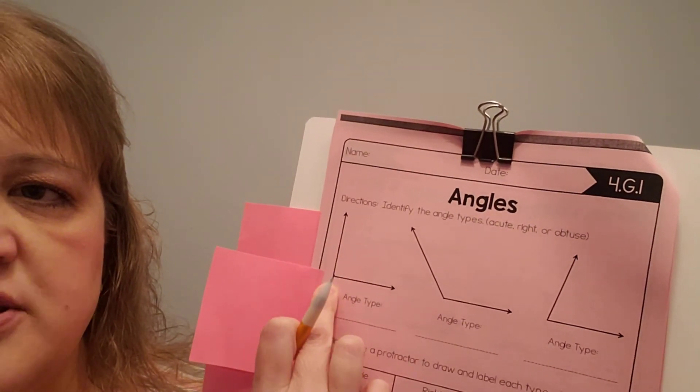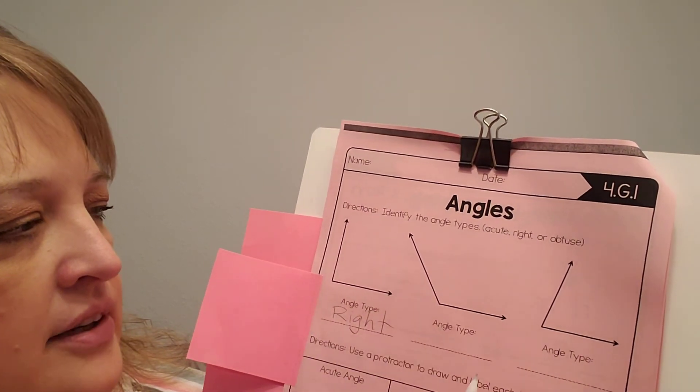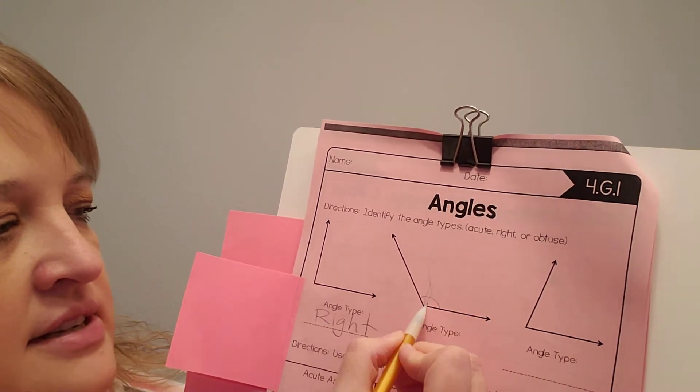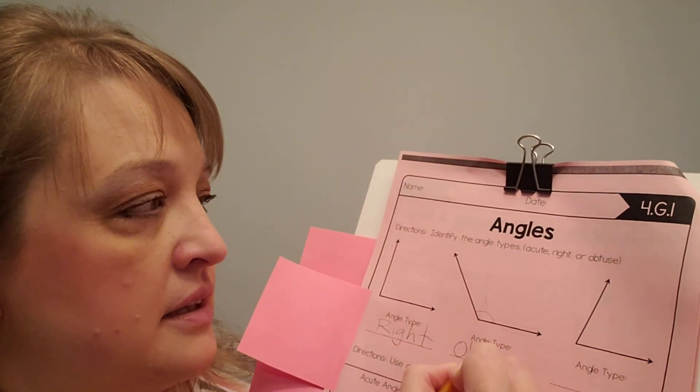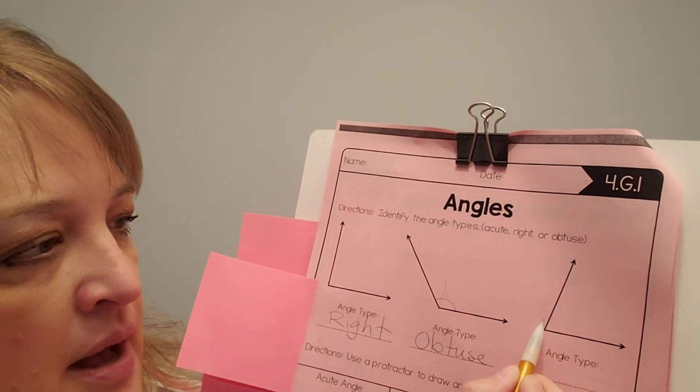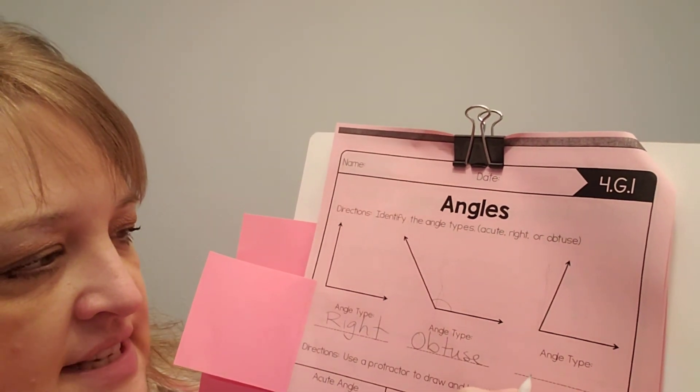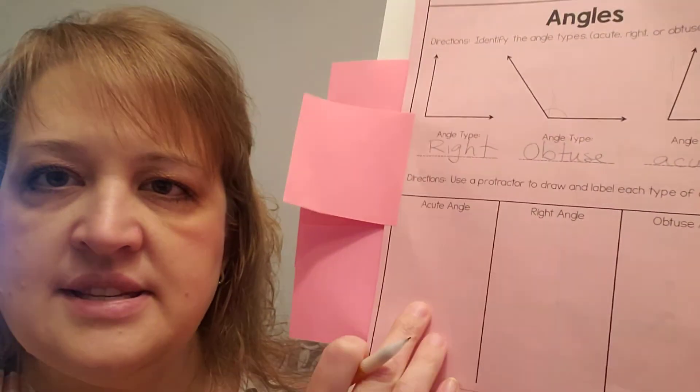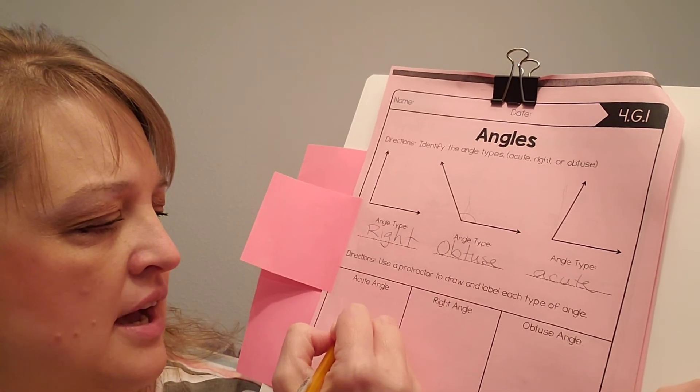Okay. This one is big. This is above 90 degrees. So if it's bigger than 90, it is obtuse. And this is smaller than 90. 90 would be there. So this is smaller than 90. So this is acute. So down here where it says to draw an angle that is acute, I'm just going to make sure that my angle is smaller than 90.